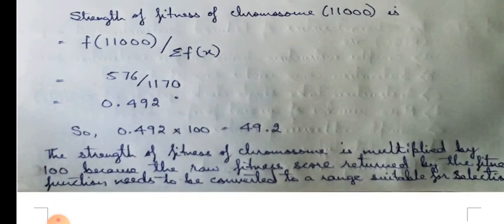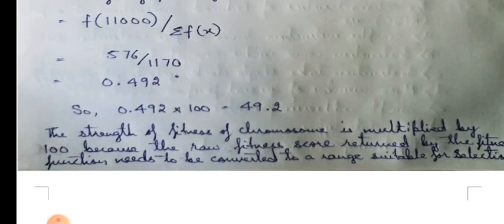Now, multiplying it by 100, we get it as 49.2 and that is the answer. The strength of fitness of chromosome is multiplied by 100 because the raw fitness score returned by the fitness function needs to be converted to a range suitable for selection.